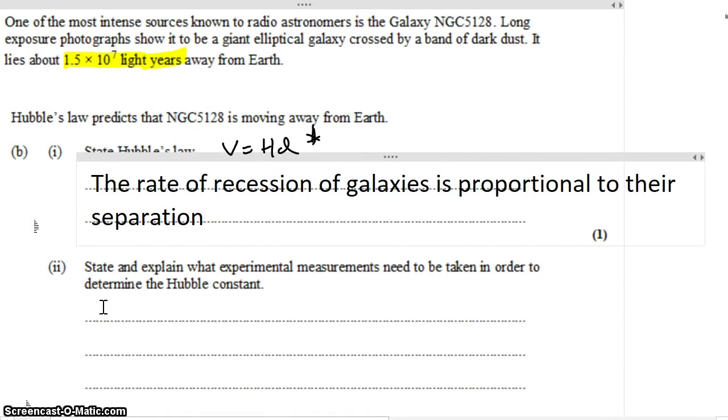Next, state and explain what experimental measurements need to be taken in order to determine Hubble's constant. Well, we see that Hubble's constant requires a distance to a galaxy and the velocity of the galaxy.